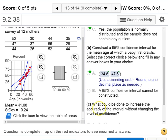So question C is saying, what could be done to increase the accuracy of our interval without changing the level of confidence? So basically, we want to make this interval a little tighter, a little smaller.